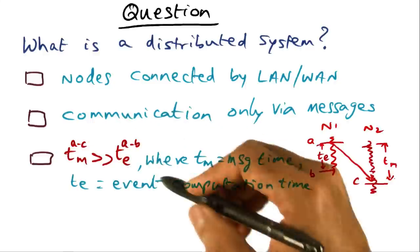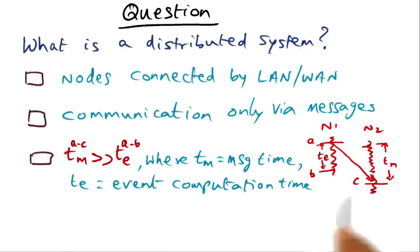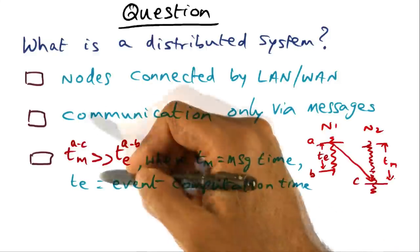So the third choice is saying that the communication time, TM, is much more, significantly more than the event execution time. That is the third choice.